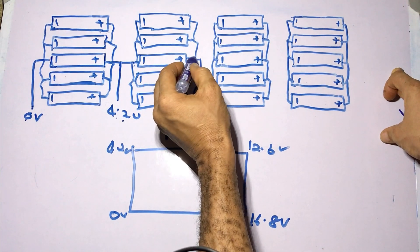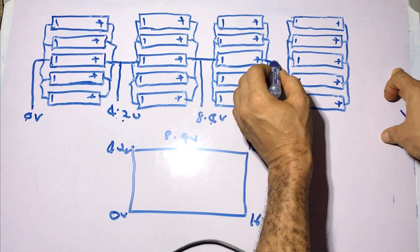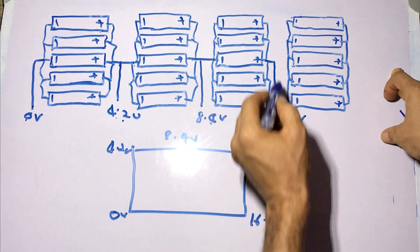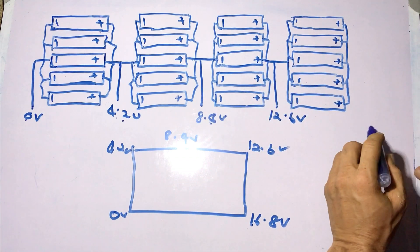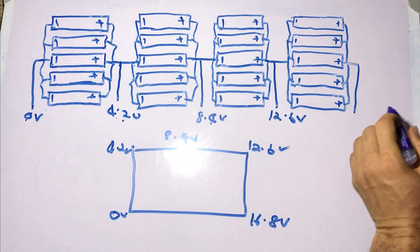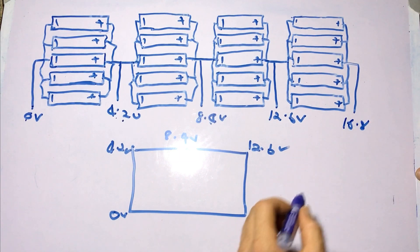Then you can go on to hook the second cell pack to the third cell pack. And if you measure voltage across here, you get 12.6 volts, then you connect the third cell pack to the last or fourth cell pack. And your voltage across the fourth cell pack will be 16.8 volts.